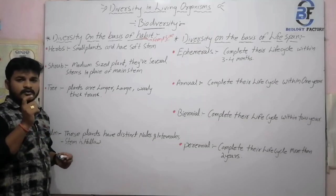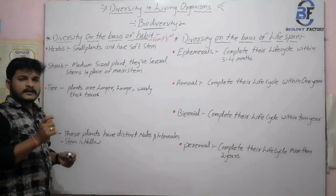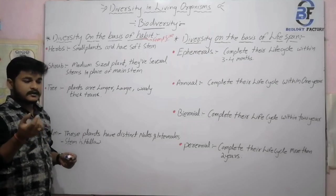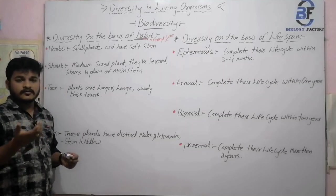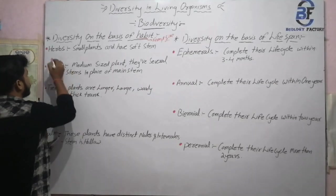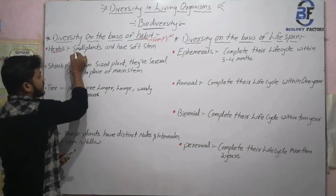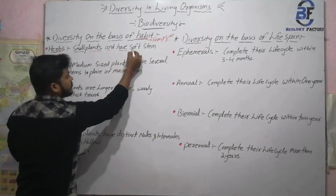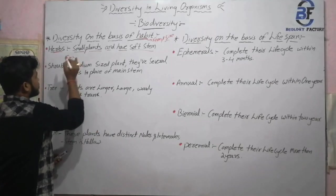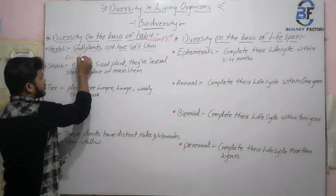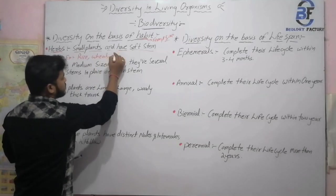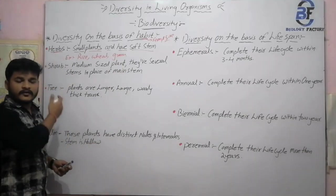If we talk about herb, it basically has a weak stem — that means the stem is soft in nature. The basic examples of herbs are your rice plant, wheat plant, and grams. So herb means basically a small plant with a soft stem. The basic examples are rice, wheat, and grams.